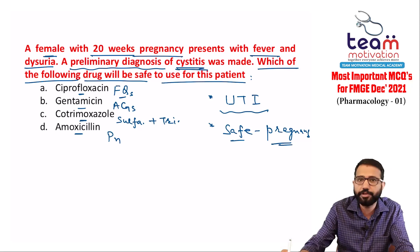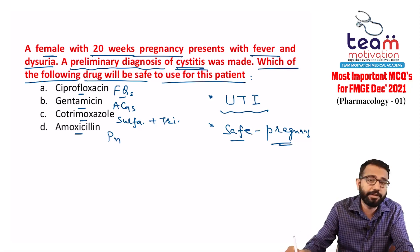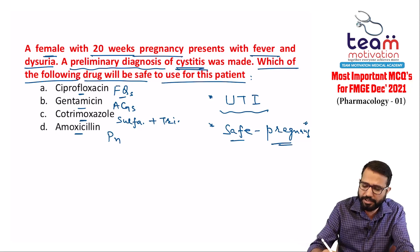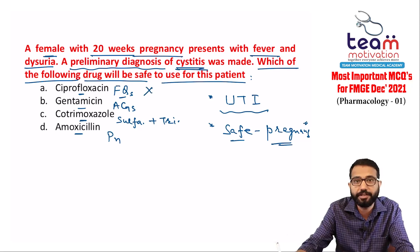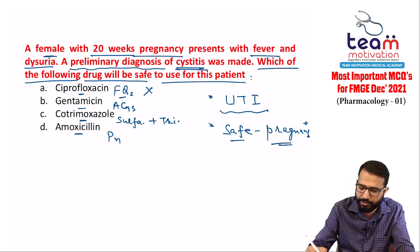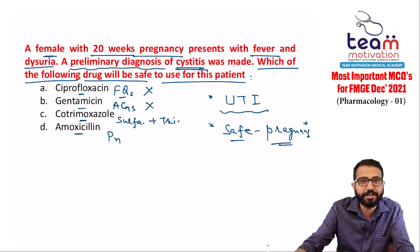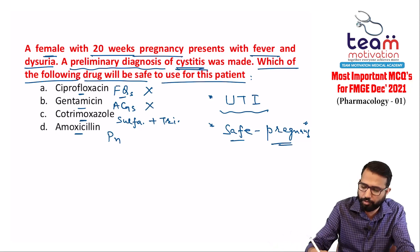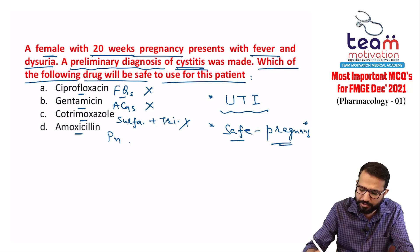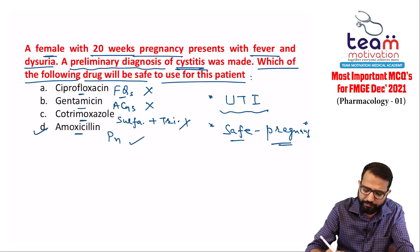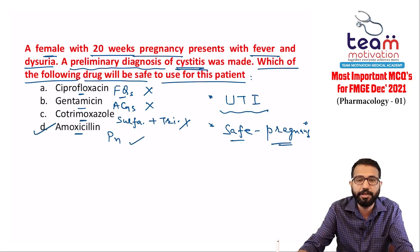All these drugs can be used for UTI, but they must be safe in pregnancy. Ciprofloxacin — not safe in pregnancy. Gentamicin — not safe in pregnancy. Cotrimoxazole — not safe in pregnancy. Amoxicillin is safe in pregnancy. Therefore, the answer is amoxicillin.